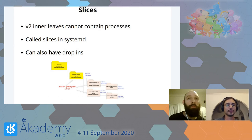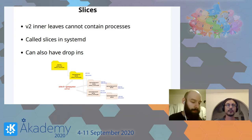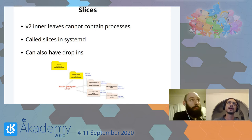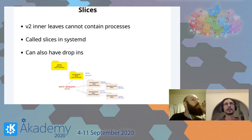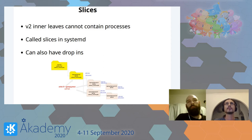cgroups v2 has a constraint where the inner nodes of the tree can't contain processes — this is to make accounting simpler for the kernel. Once a cgroup has other cgroups as children, you can't attach processes directly to it. These inner nodes are called slices in systemd, and they can also have drop-ins, meaning you can define configuration ahead of time for whole categories of applications.